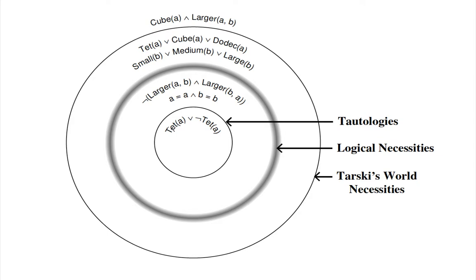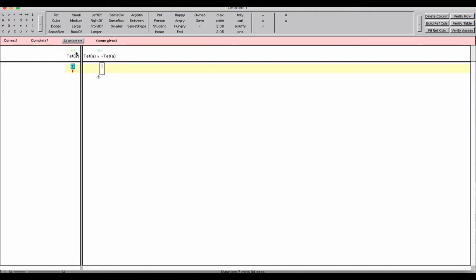Take a look at the example provided in the graphic: Tet(a) or ¬Tet(a). We're using the blocks language, but as you already know, the truth table's function is to look at the possible truth values of an atomic sentence irrespective of that sentence's meaning, in connection with how one or more connectives operate on those sentences. We have our atomic sentence, a is a tet, and our compound sentence, a is a tet or a is not a tet. The main connective is the disjunction.